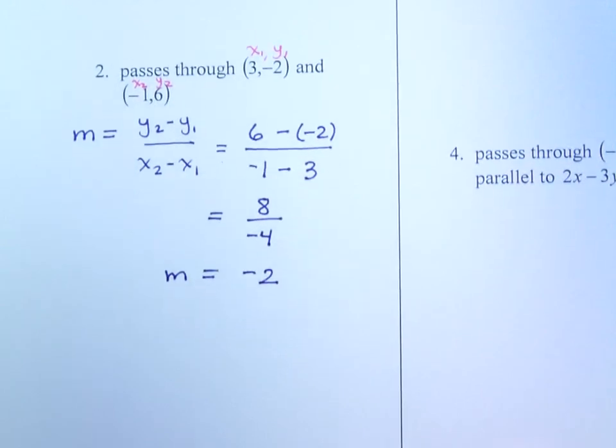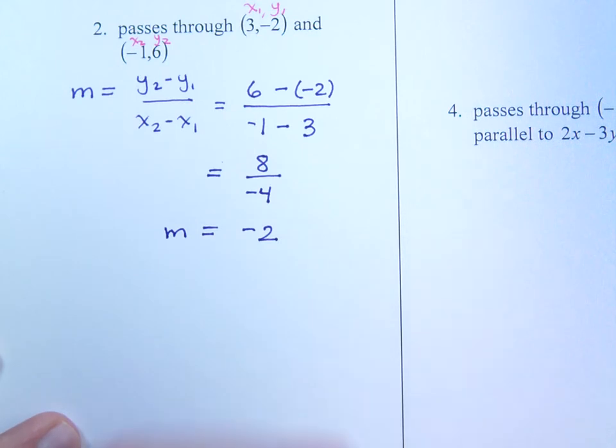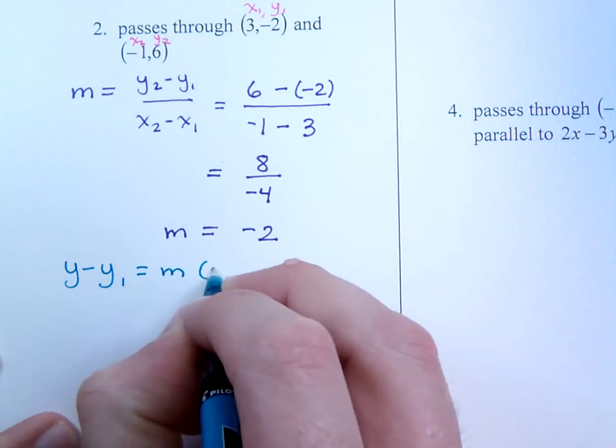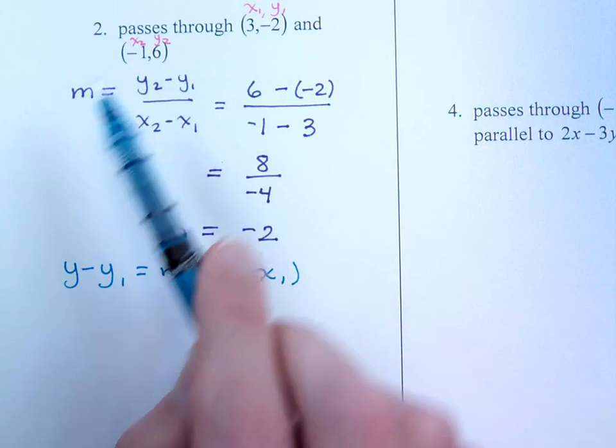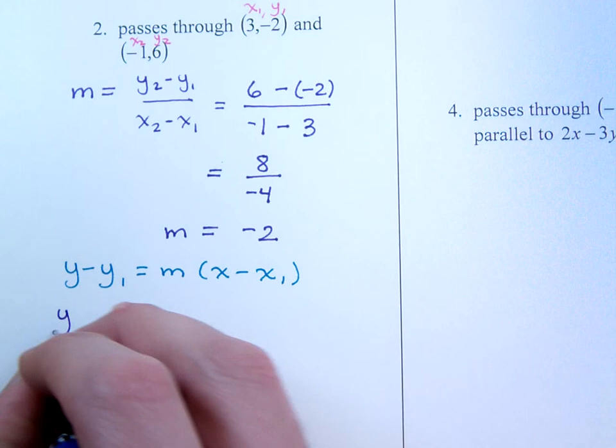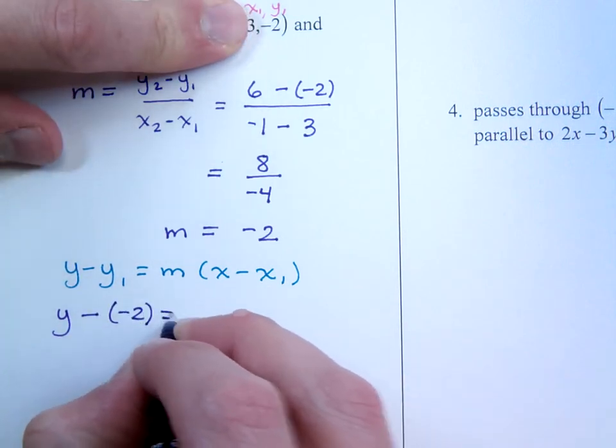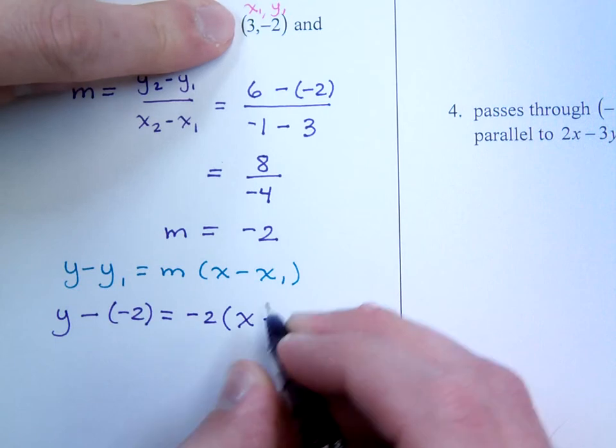Now, you can take this and use the slope-intercept form or you could use the point-slope formula. Remember the point-slope formula says y minus y1 equals m times x minus x1. And it doesn't matter what point you plug in here. You could plug in 3, negative 2 or negative 1, 6. So, let's plug those in and see what happens. I've got y minus, if I use the y1, this is a negative 2. My slope is negative 2 times x minus your x1 is 3.